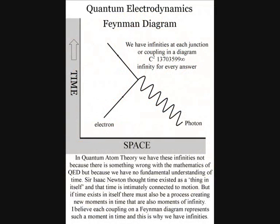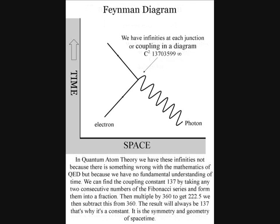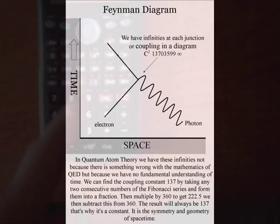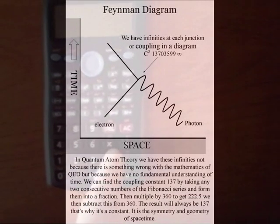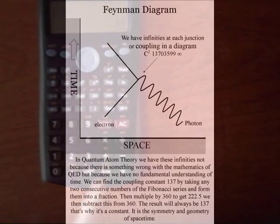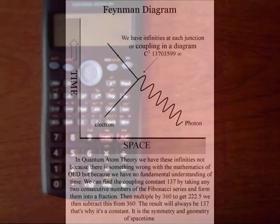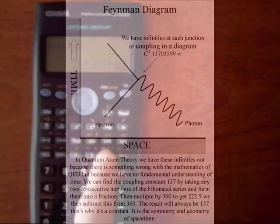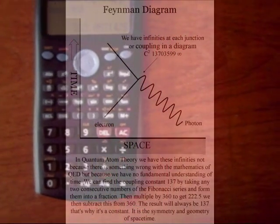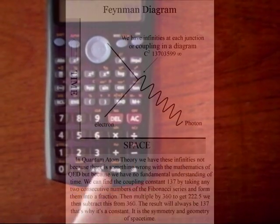Richard Feynman, in one of his physics lectures, said that every theoretical physicist is trying to find a reason for the fine structure constant 137. The fine structure constant 137, or the coupling constant alpha, is an irrational number that never ends and continues into infinity. This theory predicts that the fine structure constant is a geometrical constant in the physical process that forms the dynamic geometry of space-time, and is the size it is because if you take any two consecutive numbers of the Fibonacci series greater than the number 8 and form them into a fraction, then multiply by 360 to get 222, and then subtract this from 360, the result will always be 137.